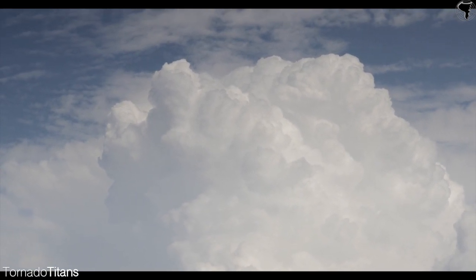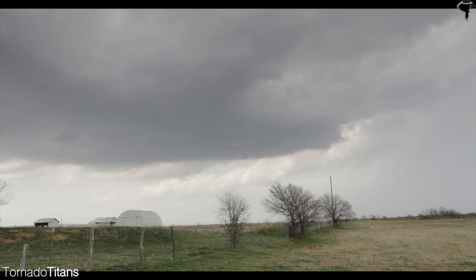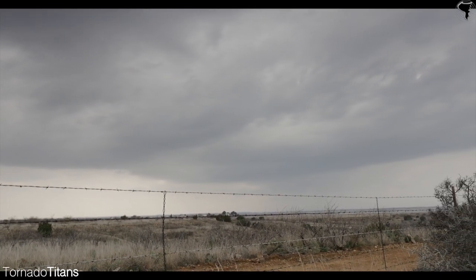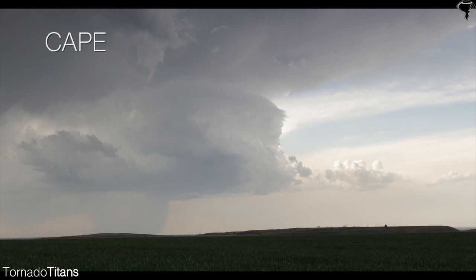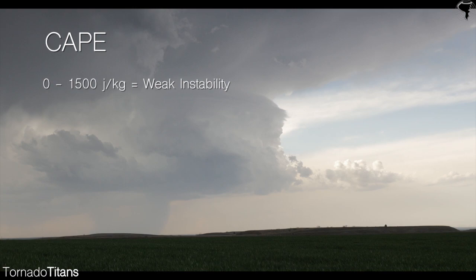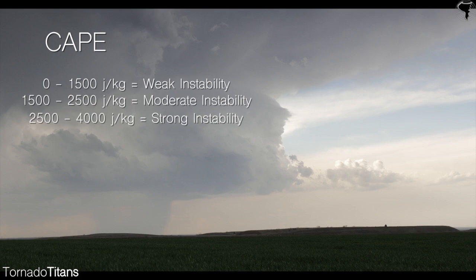Instability is measured in several ways, but one of the more popular measurements for instability is convective available potential energy, or CAPE. CAPE is measured on a scale called joules per kilogram. CAPE of up to 1,500 joules per kilogram is considered weak instability. CAPE of between 1,500 and 2,500 is considered moderate instability. CAPE of between 2,500 and 4,000 is considered strong instability. And anything above 4,000 is considered extreme instability.